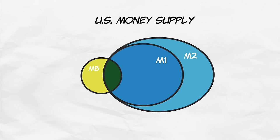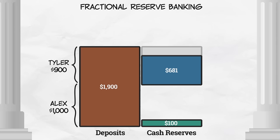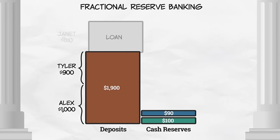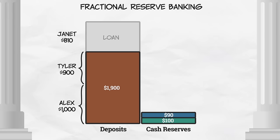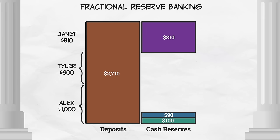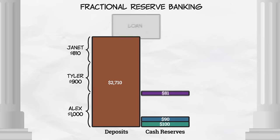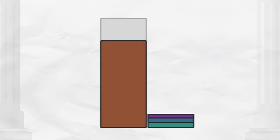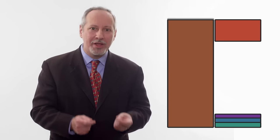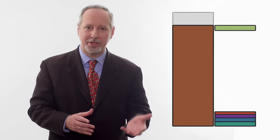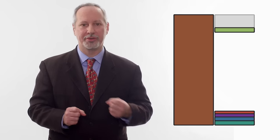And it doesn't stop there. Suppose that the bank holds 10% of Tyler's deposit in reserve and lends out 90%, or $810, say to Janet. Now deposits have increased by $2,710. And suppose that 10% of Janet's money is held in reserve and the rest is lent out. And so this process continues. As the banks make more loans, that increases the number of deposits, which increases the number of loans, which increases the number of deposits. So how much money do we ultimately end up with?